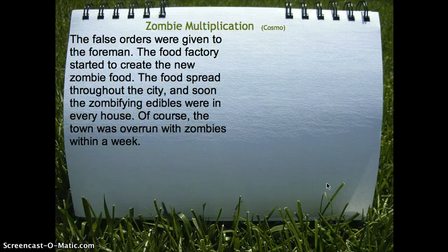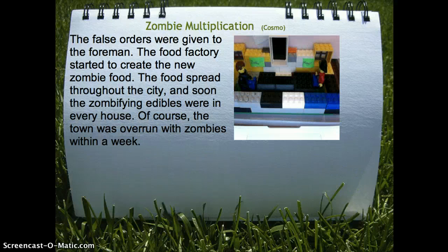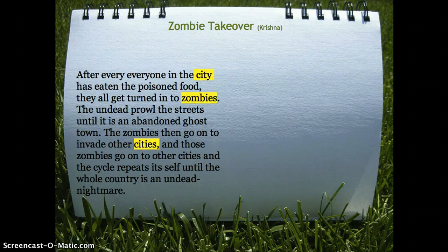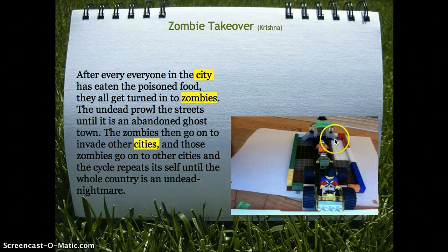These false orders were given to the factory foreman. This food factory started to create the new zombifying food. Everyone in the city bought this food, and soon these zombifying edibles were in every house. Within the week, the town was overrun with zombies. After everyone in the city has eaten the poisoned food, they all get turned into zombies. The undead prowl the streets until it is an abandoned ghost town.